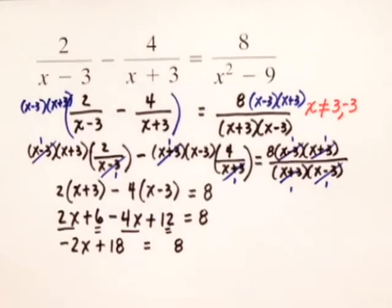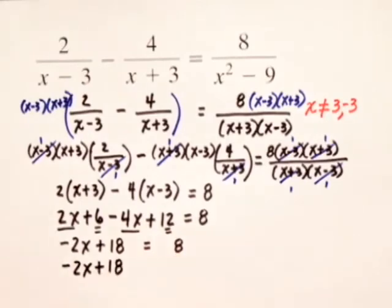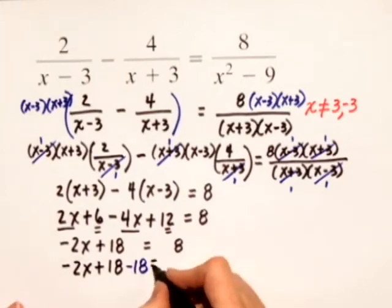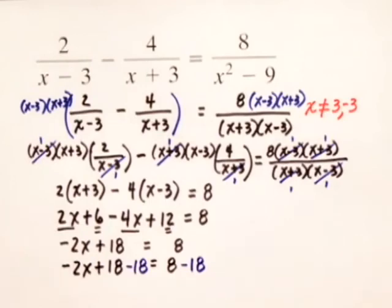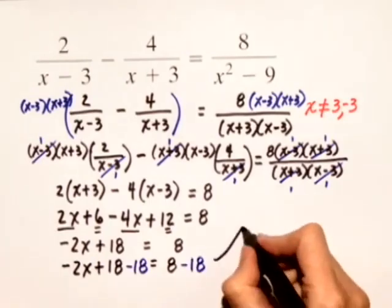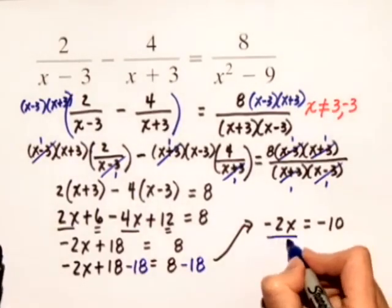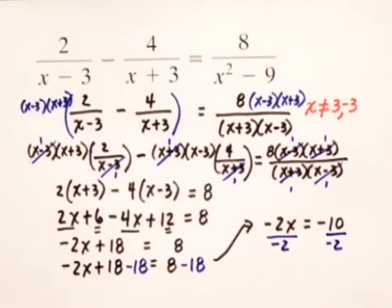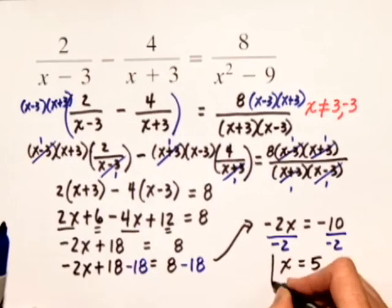Next we'll subtract 18 from both sides of this equation. Negative 2x plus 18 minus 18 is equal to 8 minus 18. When we simplify this, now we have simply negative 2x on the left-hand side is equal to 8 minus 18 gives us negative 10. Our last step is to divide both sides by negative 2, and we're left with our solution, x is equal to positive 5.